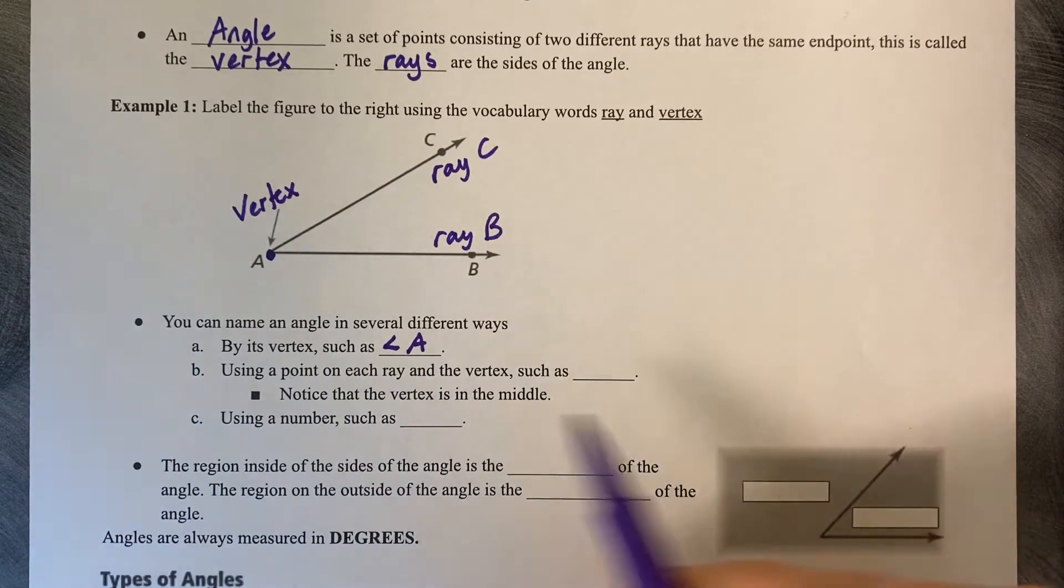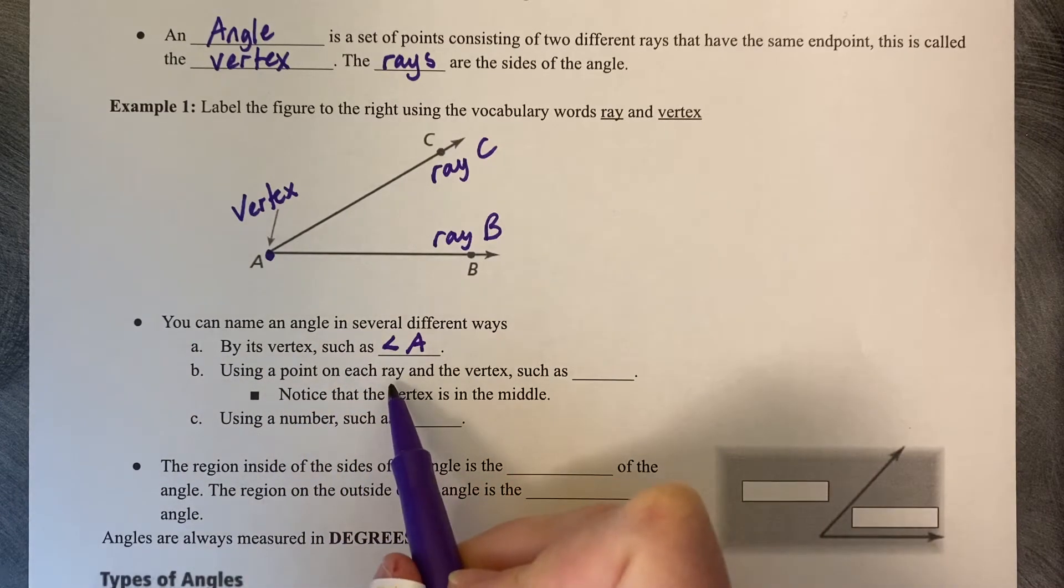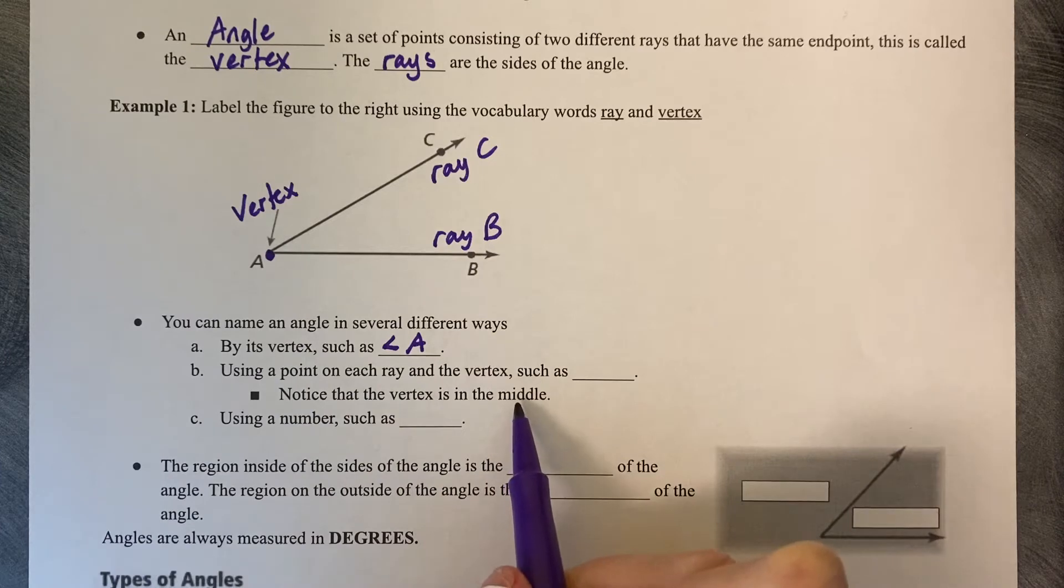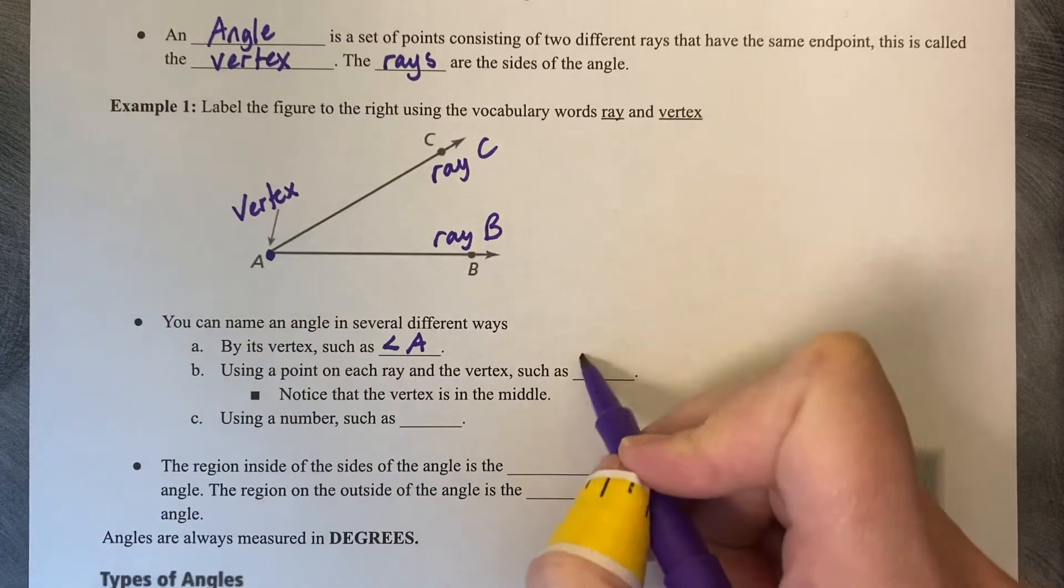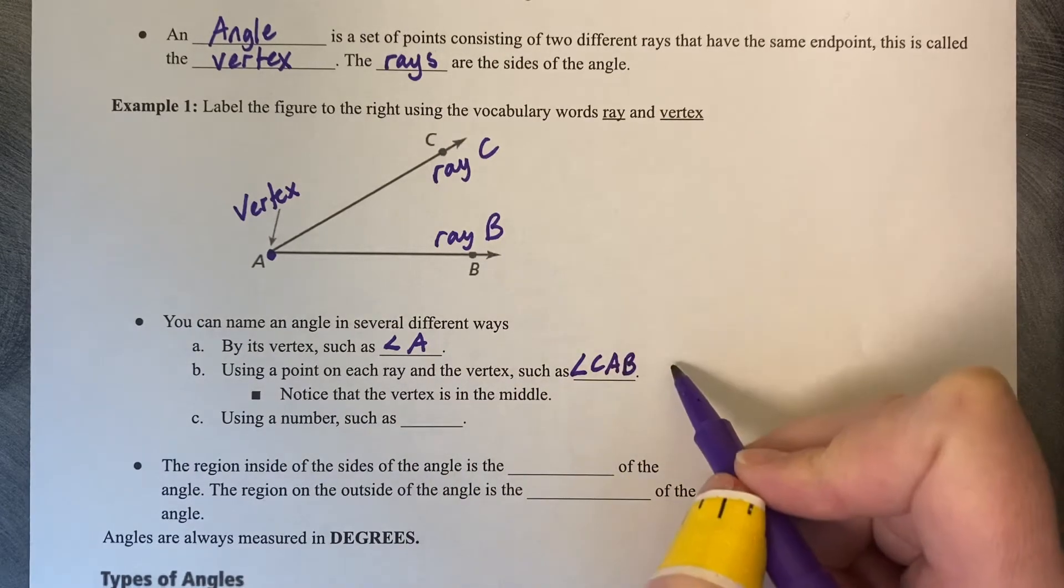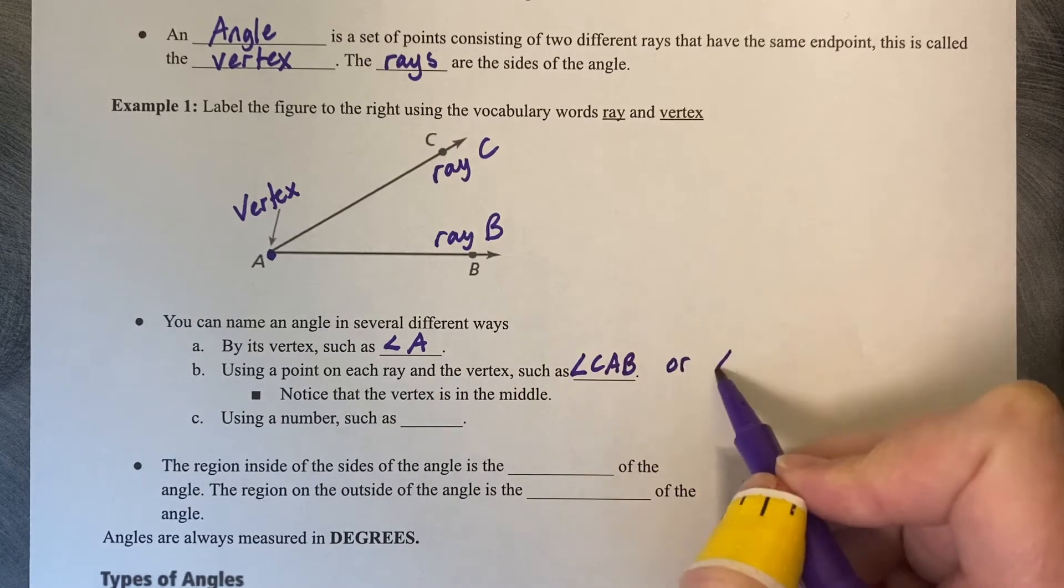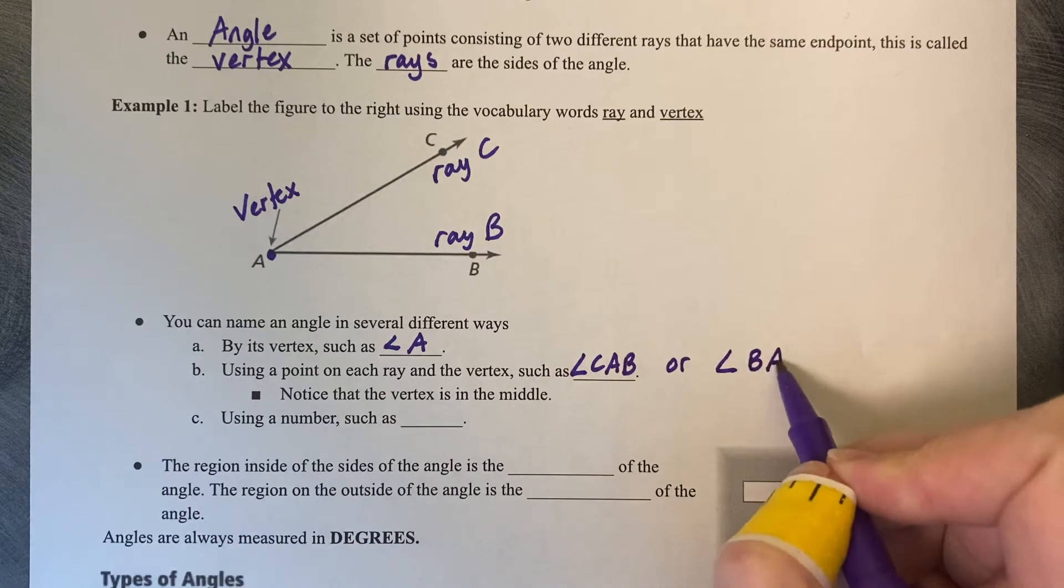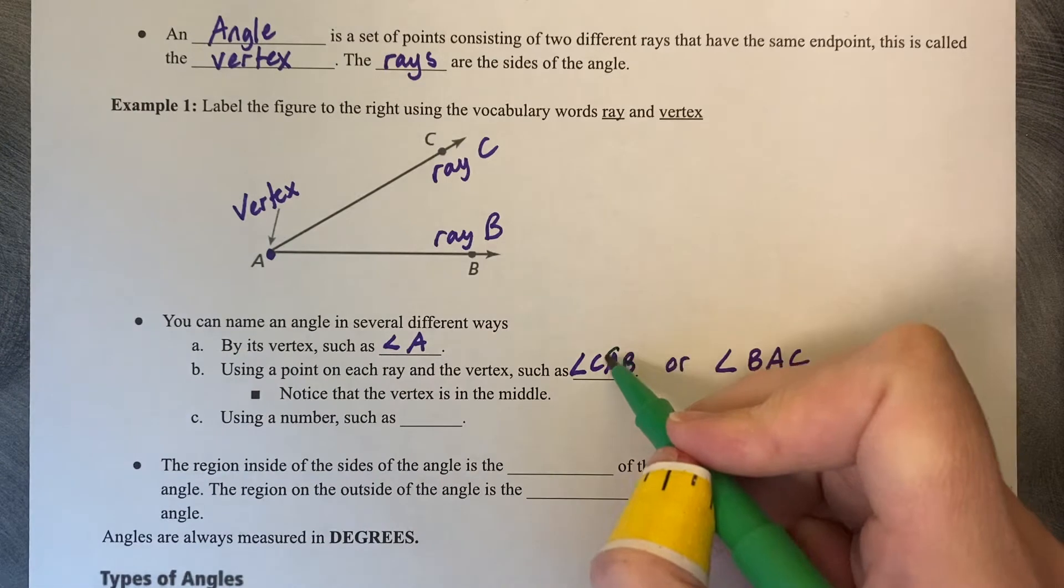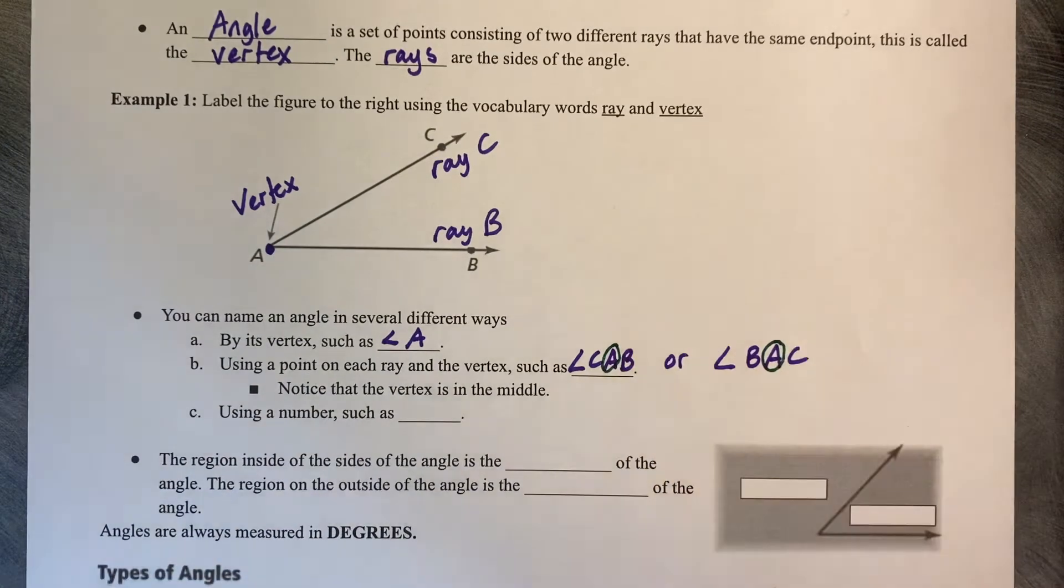Another way to name it is using a point on each ray and the vertex, and note that the vertex always has to be in the middle. Angle CAB or you could call it angle BAC. But the important thing to note is that the vertex always has to be the center letter of your name.